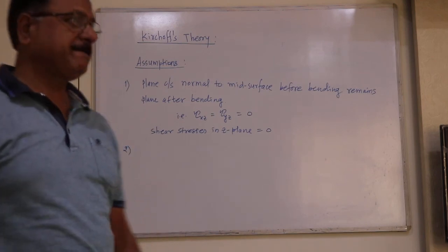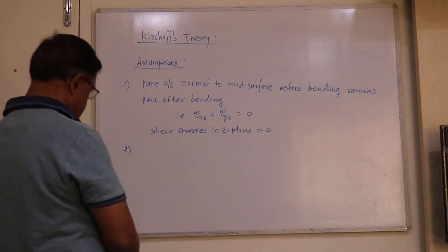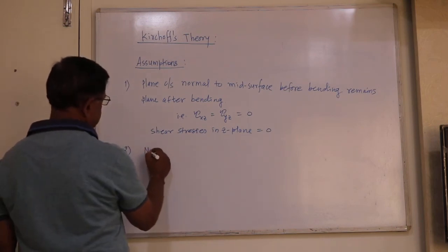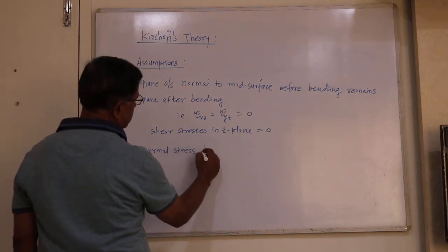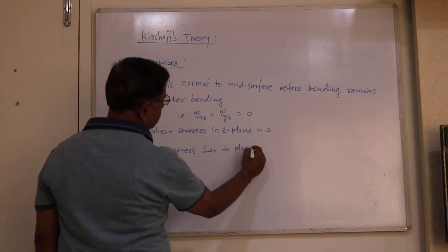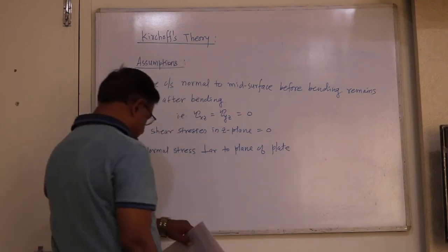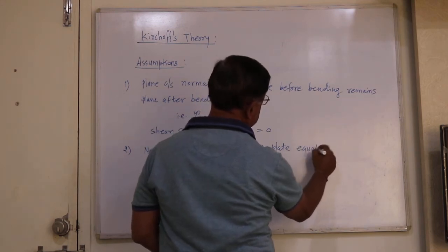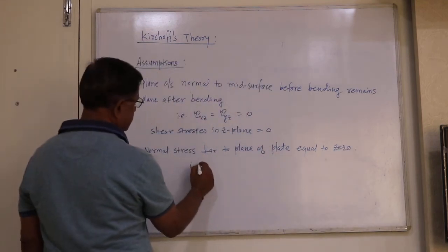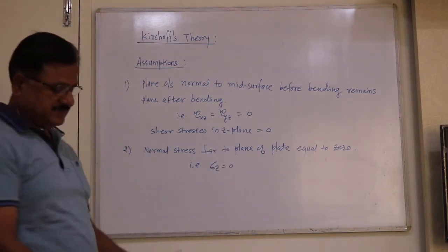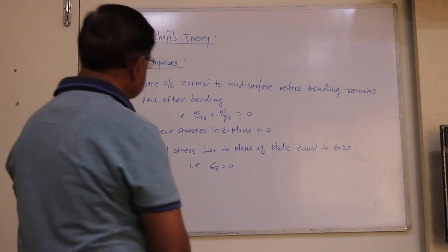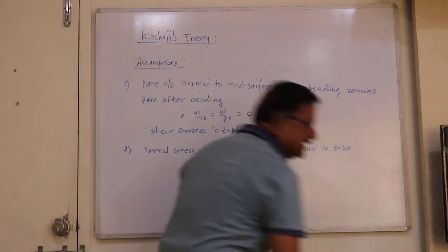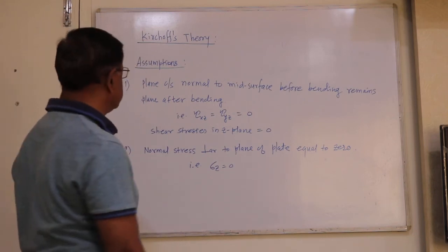The second assumption is: the normal stress perpendicular to the plane of the plate is equal to zero, that is sigma z equals zero. These are the two main assumptions we are going to consider in plate bending analysis and in the finite element formulation of a plate.